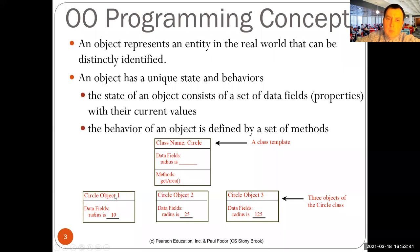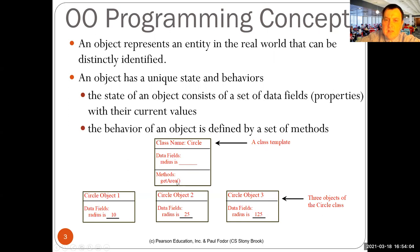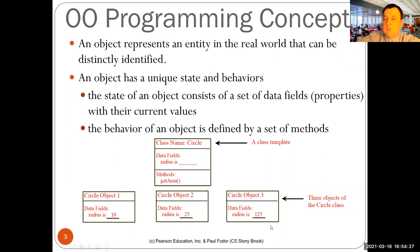Also in UML, you can represent objects. You represent classes using the class name, the data fields, and the methods. Then you can represent objects like circle object one with a radius of 10, circle object two with a radius of 25, circle object three with a radius of 125. The getArea method is invoked for each one of them, returning the area of a circle with that specific radius.